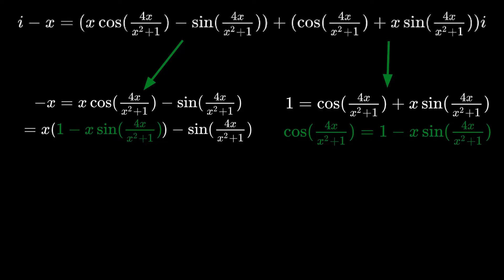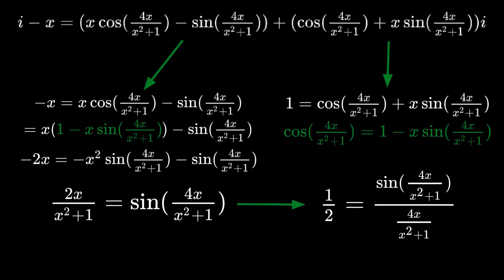We can substitute the second equation into the first equation to get x times 1 minus x sine 4x over x squared plus 1 minus sine of 4x over x squared plus 1 equals negative x. This simplifies to 2x over x squared plus 1 equals sine of 4x over x squared plus 1, and dividing both sides by 4x over x squared plus 1 gives 1 half equals sine of 4x over x squared plus 1 over 4x over x squared plus 1.